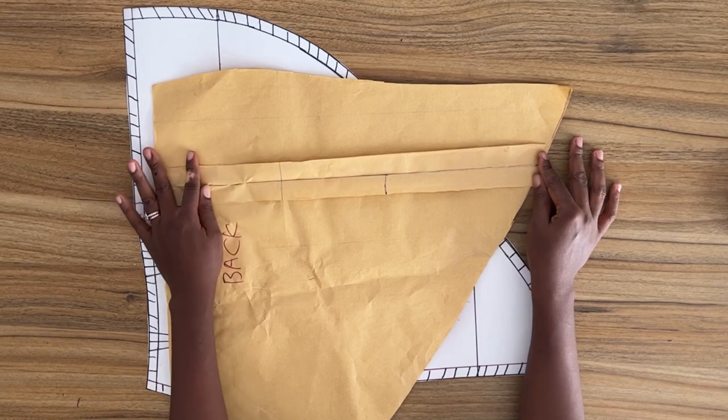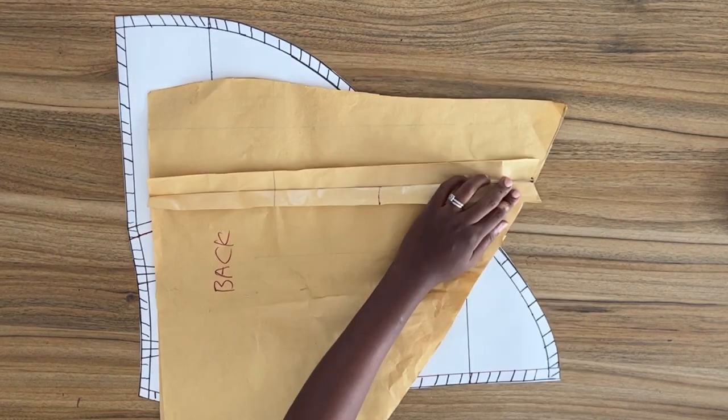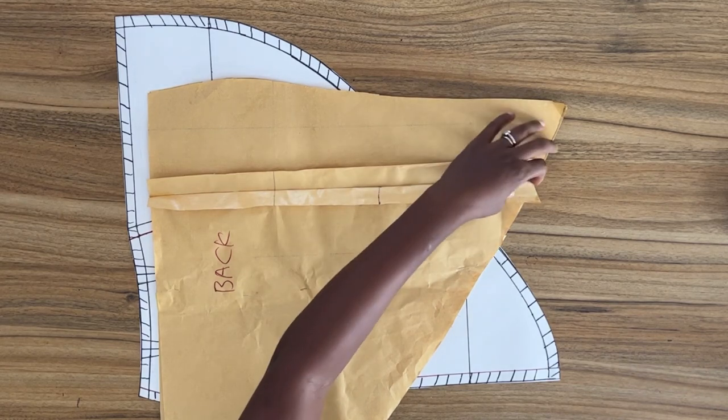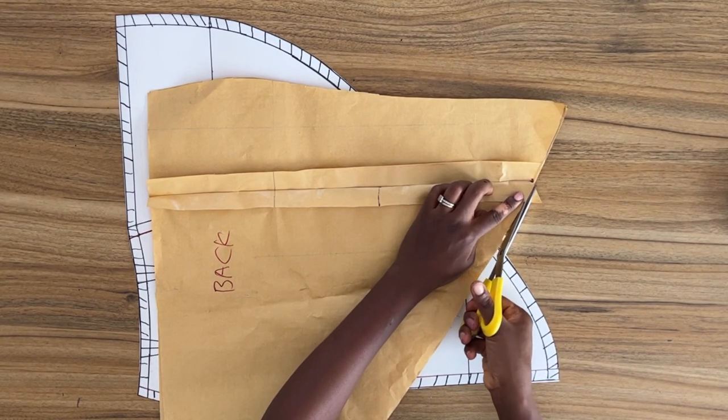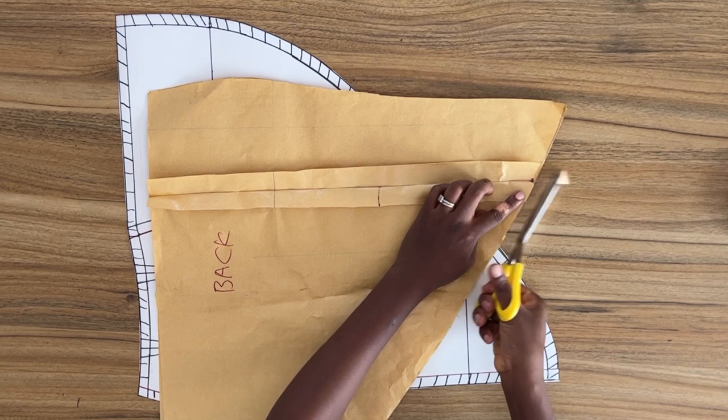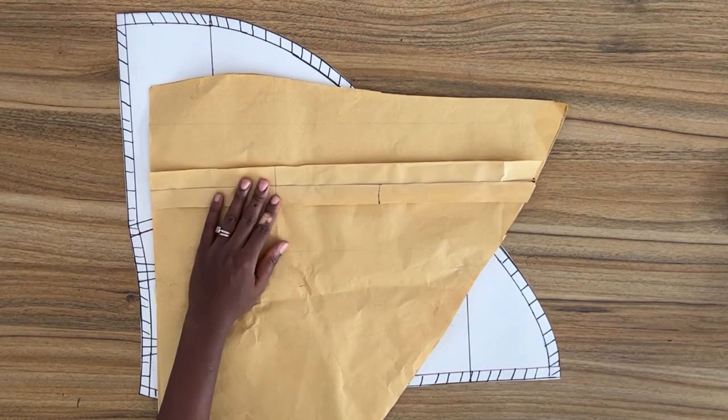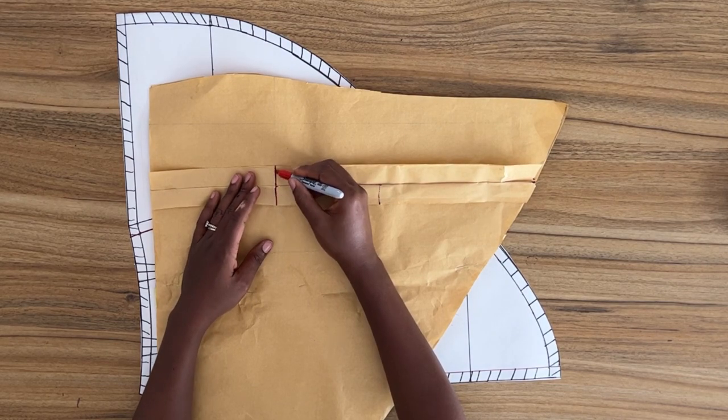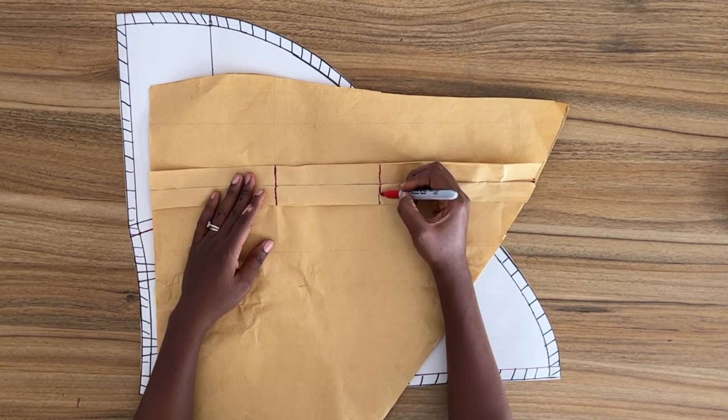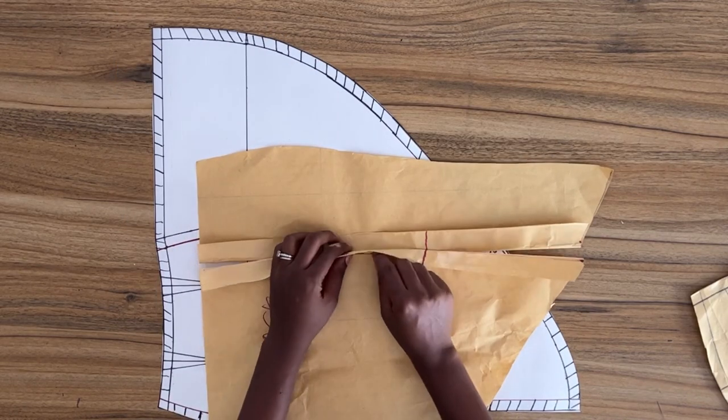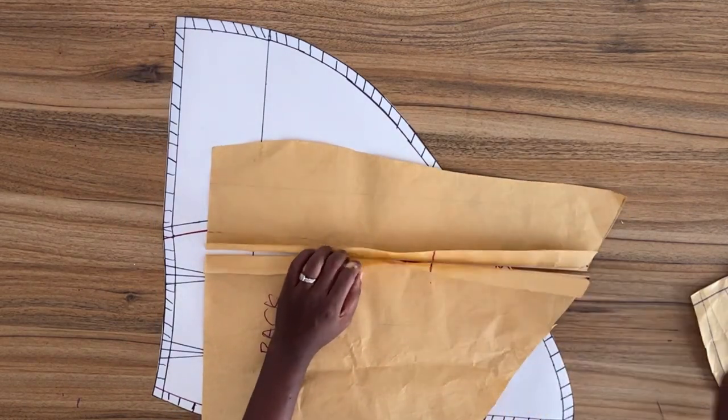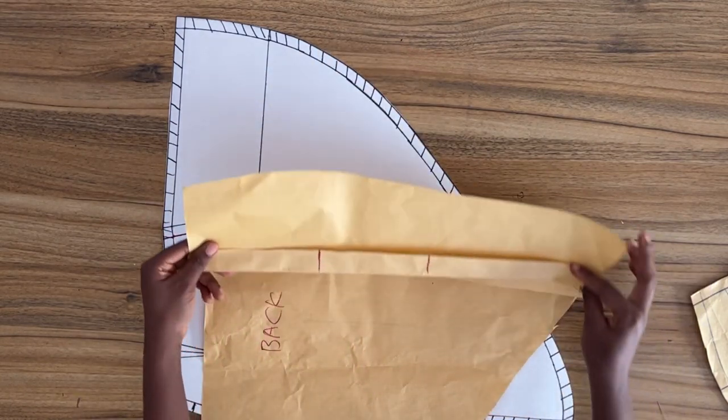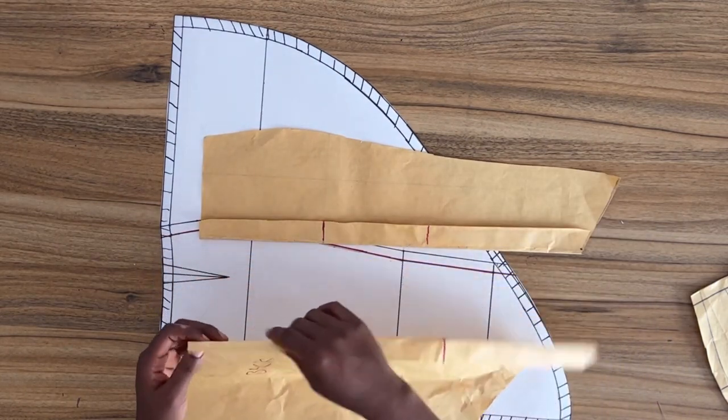And I want the hem of the zipper allowance to follow the hem of the skirt, so I'm just going to trim off this portion. So once this is done, I'm just going to go ahead and mark where my zip allowance is going to end and where my slit is going to begin from. Once I unpin this pattern, it should look something like this. So you should have two pieces for the back, and your pieces should be like this.